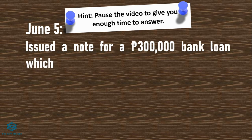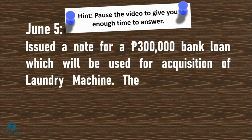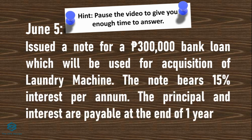On June 5, we issued a note for a 300,000-peso bank loan, which will be used for the acquisition of a laundry machine. We are the ones who borrowed. The note bears 15% per annum, and the principal and interest are payable at the end of one year. Let's do the entry.